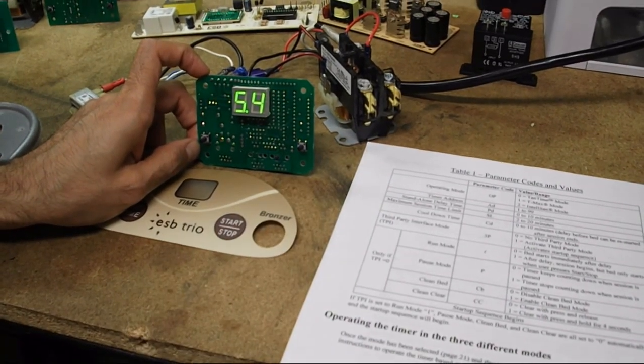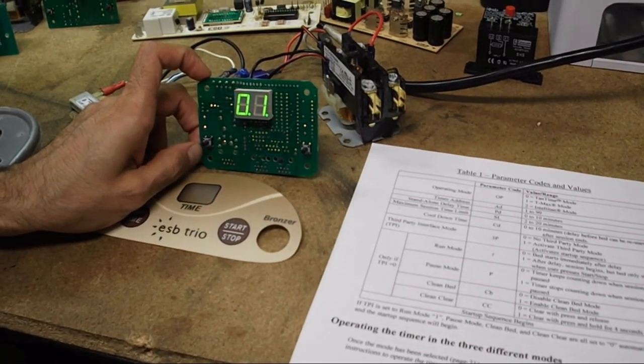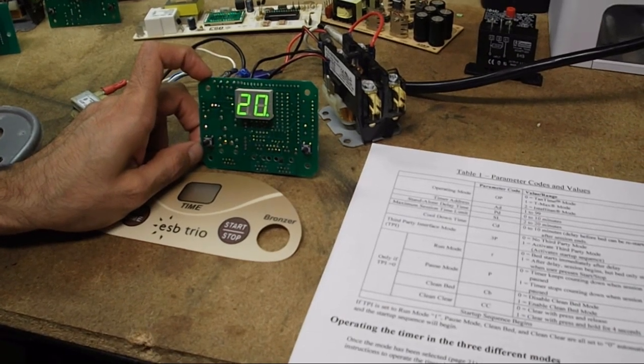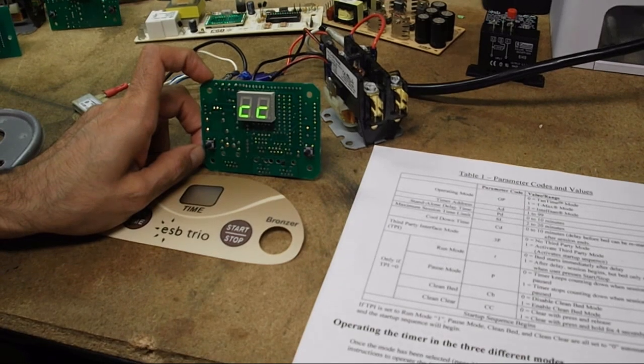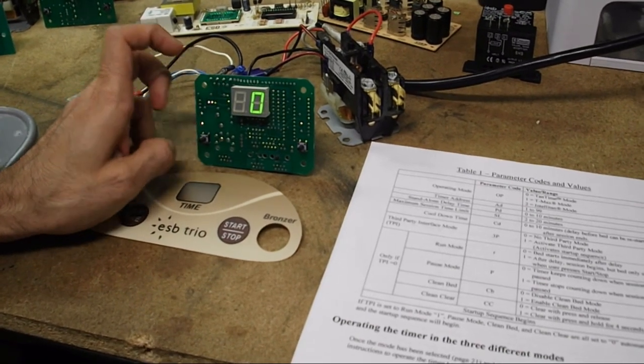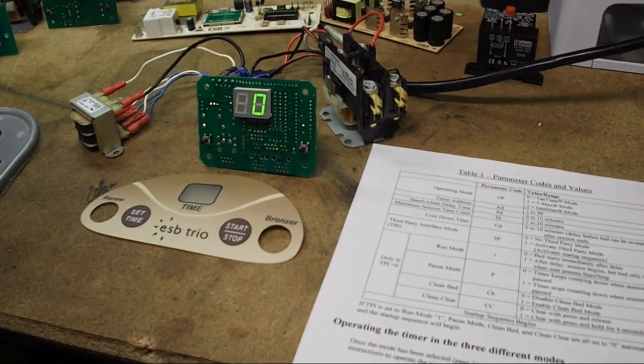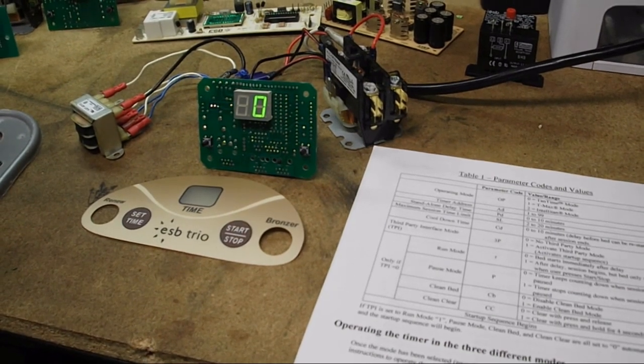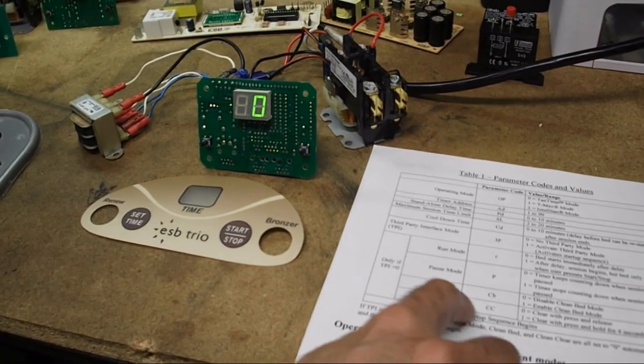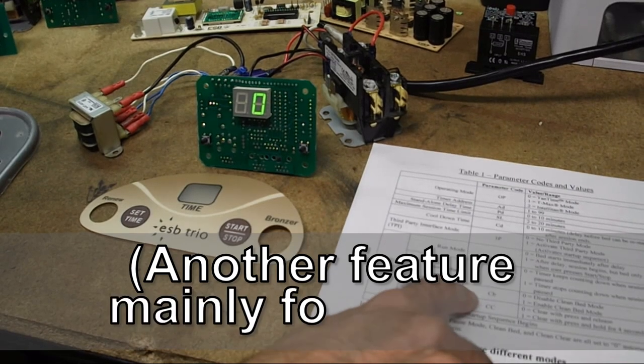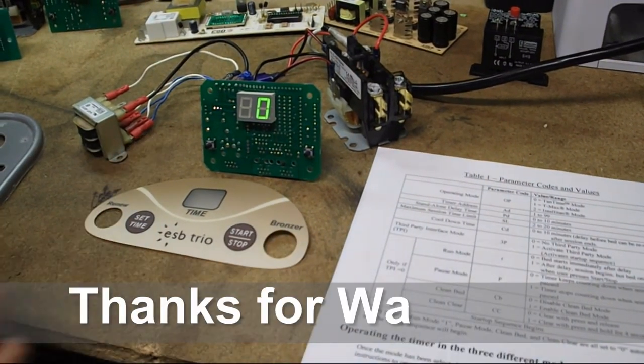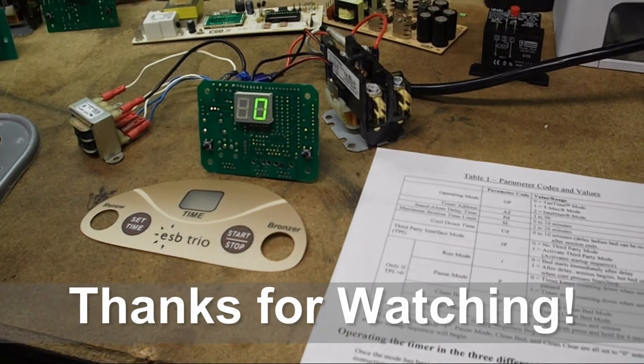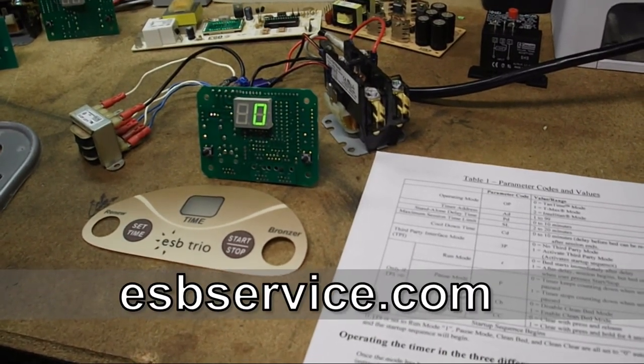So here we go. 5.4 L 01 20. There's the two dashes and then the CC and then the timer should be set to how you want it. Again, you would only have the CC for the clean clear if you turn the CB for clean bed to one for on. And that's how to set the timer parameters on your two button digital ESB timer.